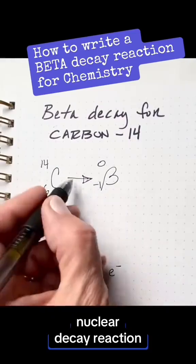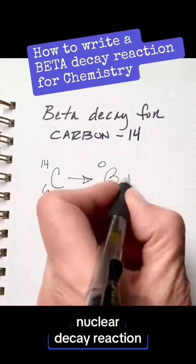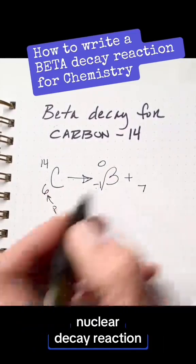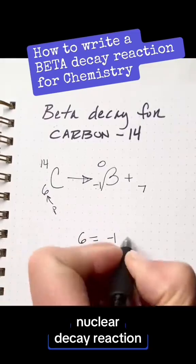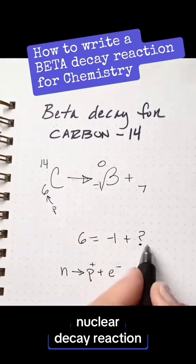Now what's left over? 6 equals negative 1 plus what? That has to be 7. So here's the math. 6 equals negative 1 plus what? 7.